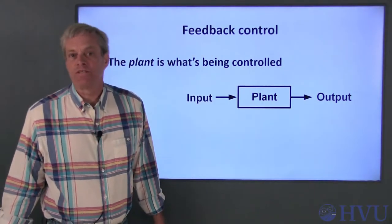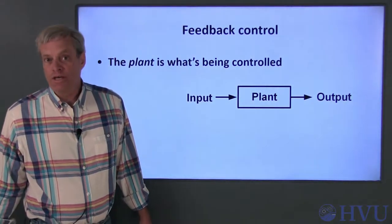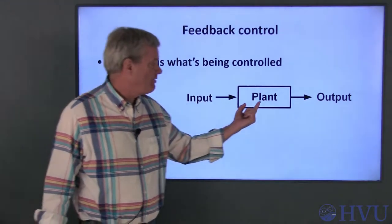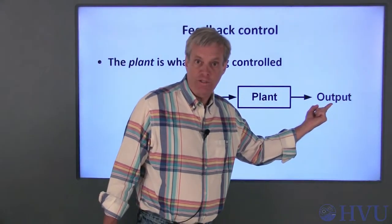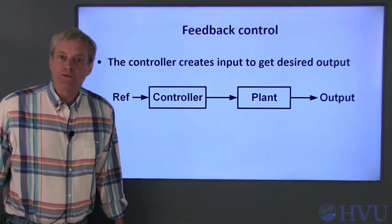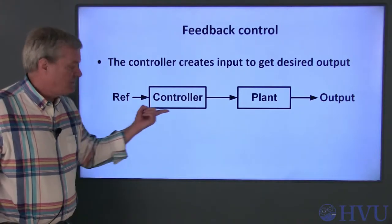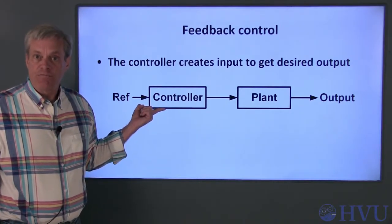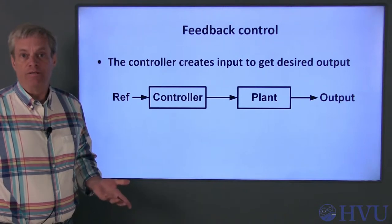Examples of this are everywhere. When you are cooking, you adjust the setting on the stove burner to get your frying pan to the right temperature. In control systems, the controller is typically an automated system that adjusts the input to the plant in order to get the desired output.